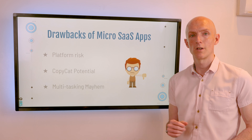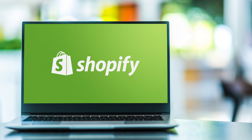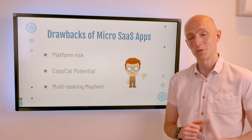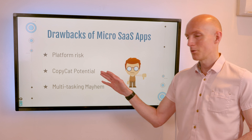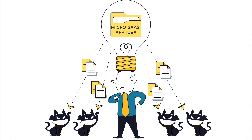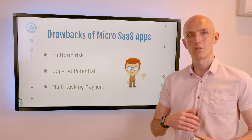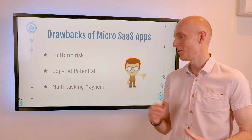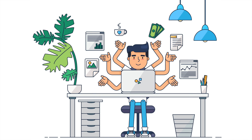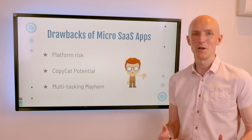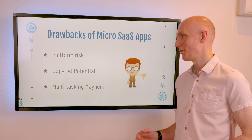The drawbacks of micro SaaS apps: number one is platform risk. If you build your app on a platform, your success is tied to that platform's ecosystem — if it declines in popularity, your app suffers. If you're building your own standalone app rather than a plugin, you'll be protected from this reliance. Next, copycats — if people see your app gaining popularity, they may launch a competing product. You can minimize this by obfuscating your code, offering a great customer experience, and making it so good customers don't want to look elsewhere. Finally, multitasking mayhem — you'll wear many hats: programmer, project manager, marketer, support agent, finance manager. But having variety in your day can really help break up the monotony of just coding all day.